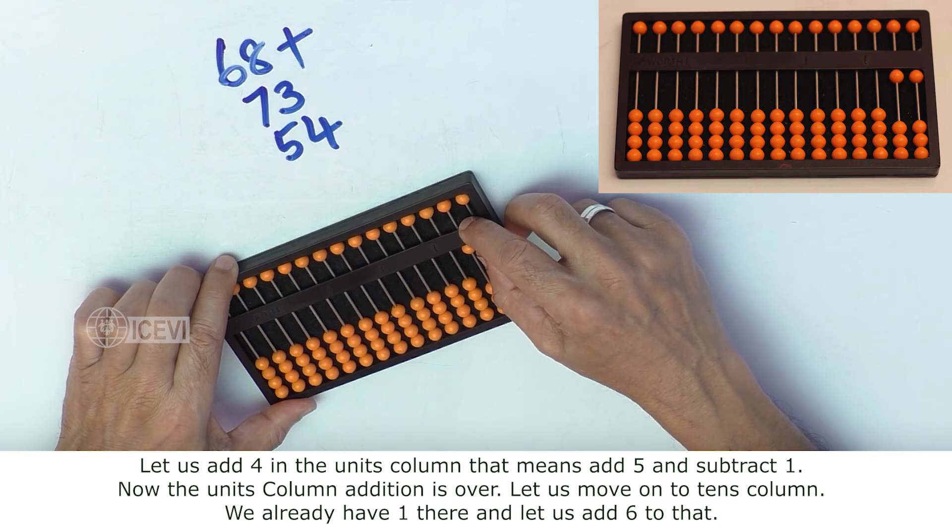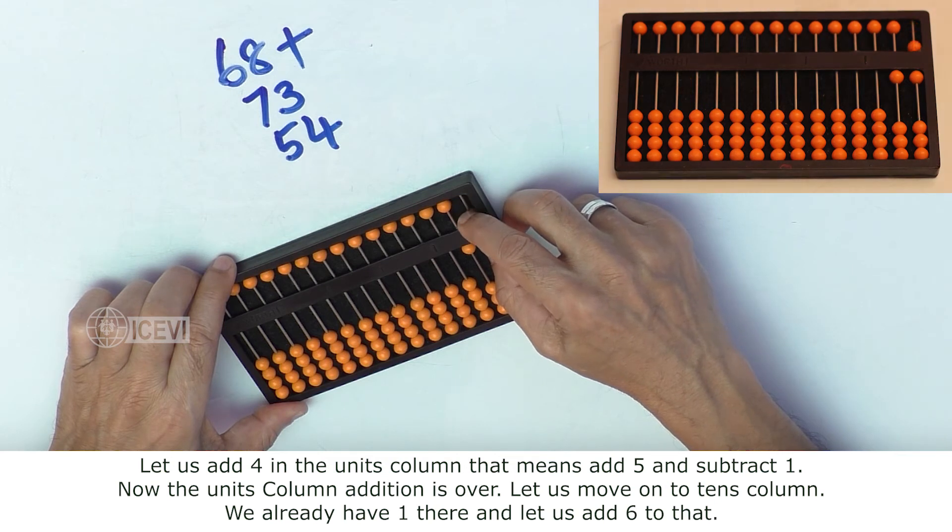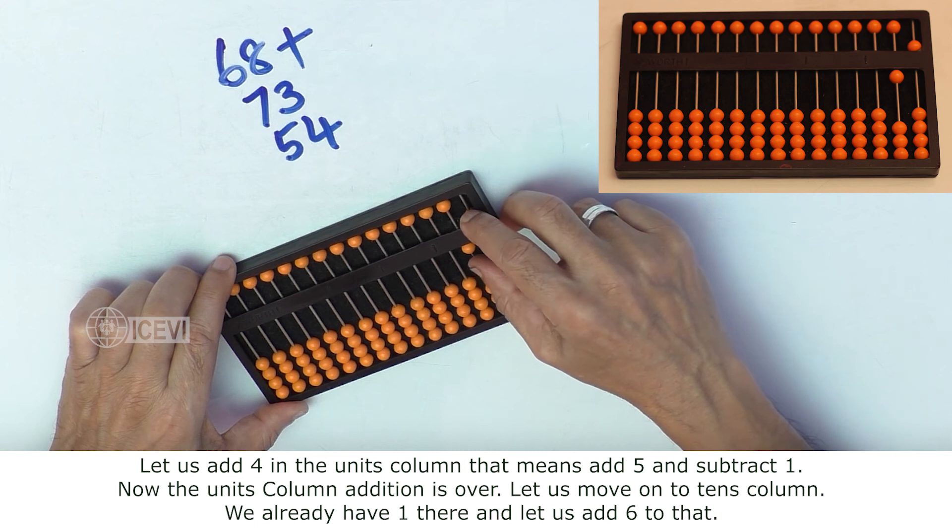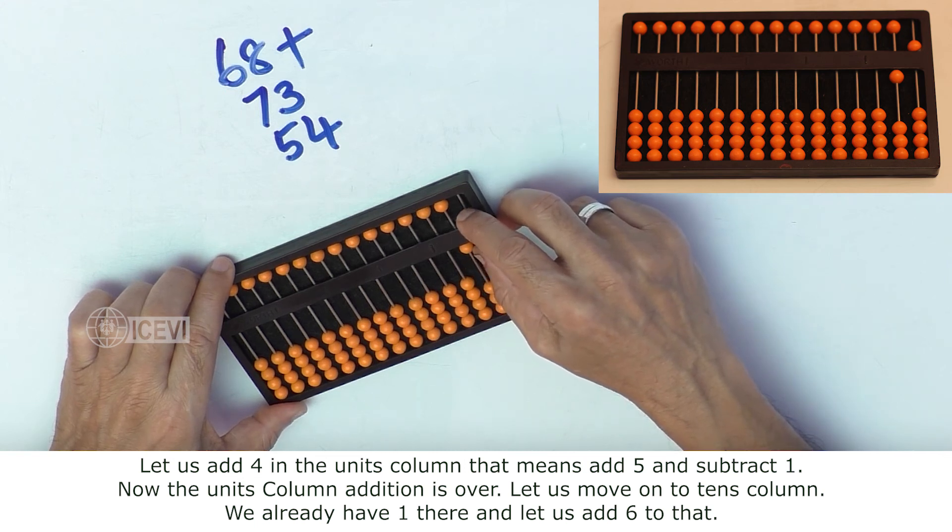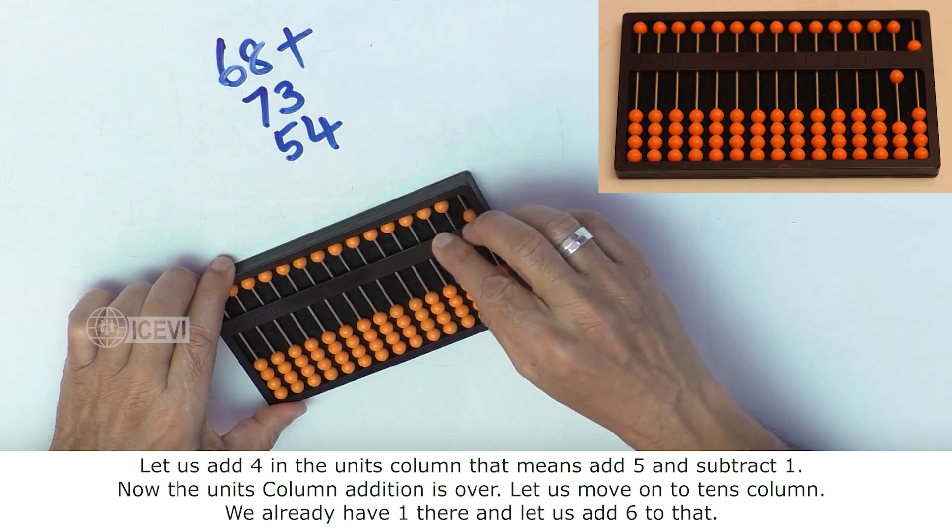Now let us add the number 4 in the units column. That means we add 5 in the upper Abacus and clear 1. That means we have completed the addition of the numbers in the units column. Let us move on to the tens column.